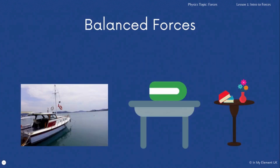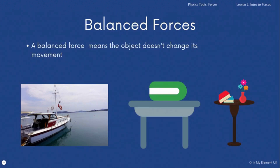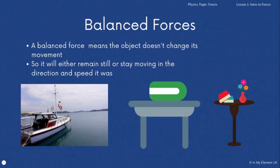Forces can be balanced. A balanced force means that the object doesn't change its movement — it doesn't mean it has to stay still. It also means it can move at a steady speed in the same direction. That boat is stationary, but if it were moving at a steady speed the force on it would be balanced. The book's forces are balanced as it sits on the table, and the same with the vase of flowers on the other table.